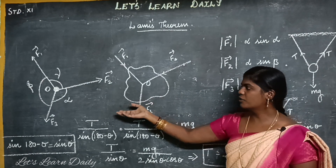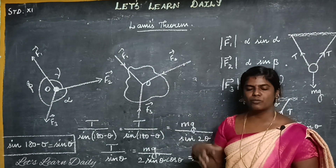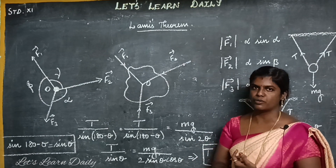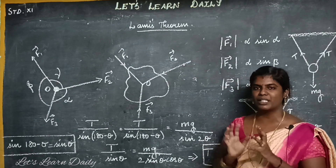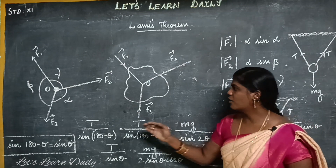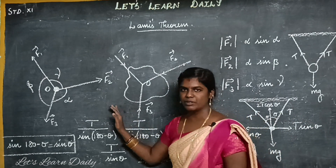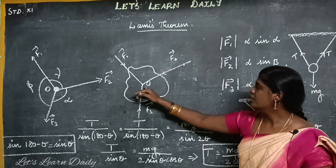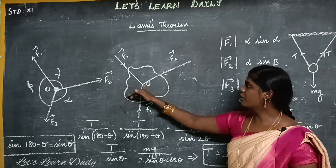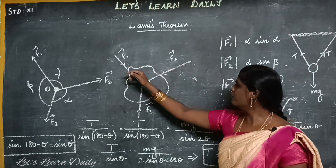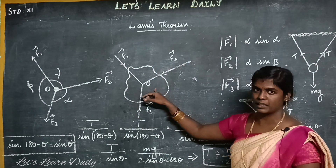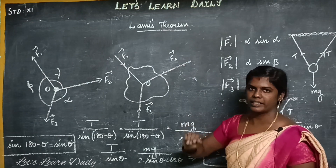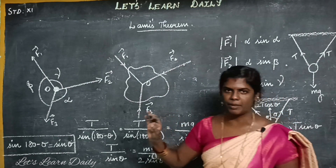If the three forces are not equal to the equilibrium condition, then there is movement. So, there is an equilibrium position in the body. You can apply Lami's Theorem. There is an object, there is a common point, and the 3rd force is added. So, if you have concurrent forces, you can apply Lami's Theorem.